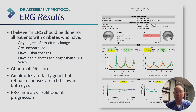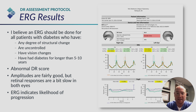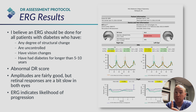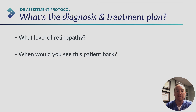So this patient with mild NPDR — it's not a terrible ERG. There's still decent amplitude here. It is slightly delayed, but overall the DR score is elevated, which indicates this patient is more likely to progress. We've got an abnormal DR score. Amplitude's fairly good. Retinal responses are a bit slow. When you have abnormal structure — mild hemorrhaging — and abnormal function with an abnormal ERG, this indicates the patient is much more likely to progress.